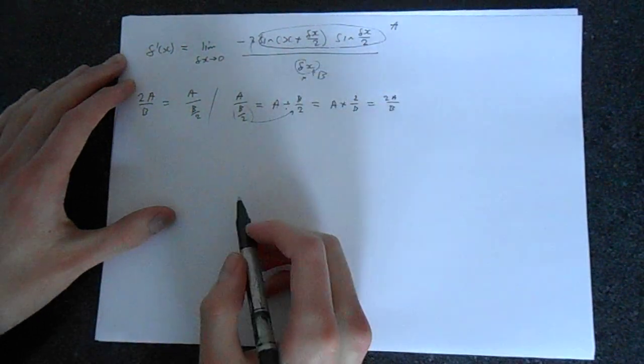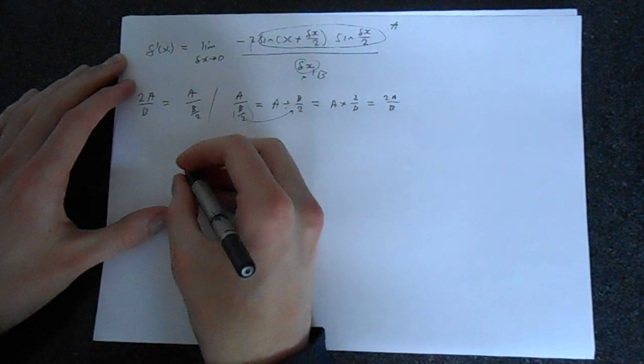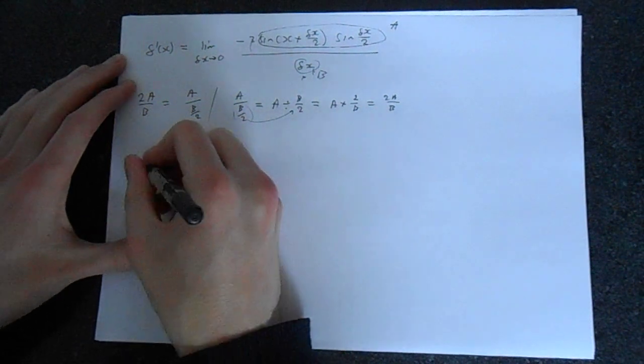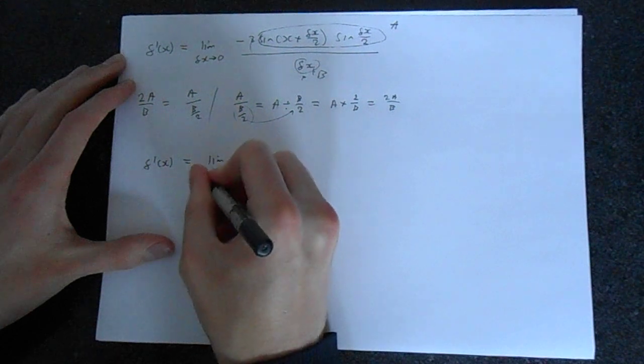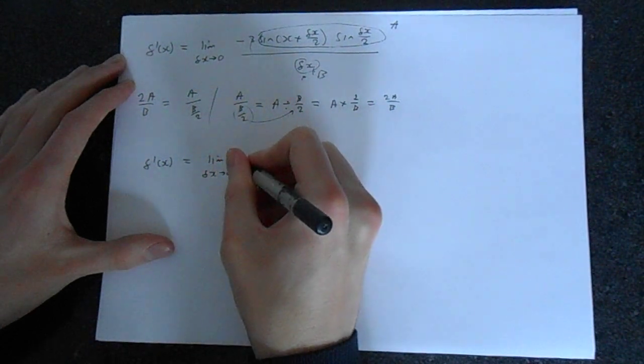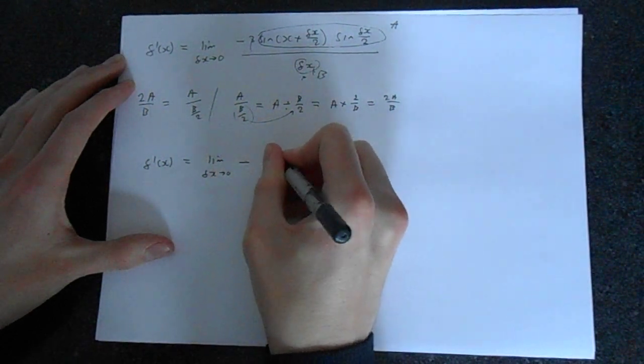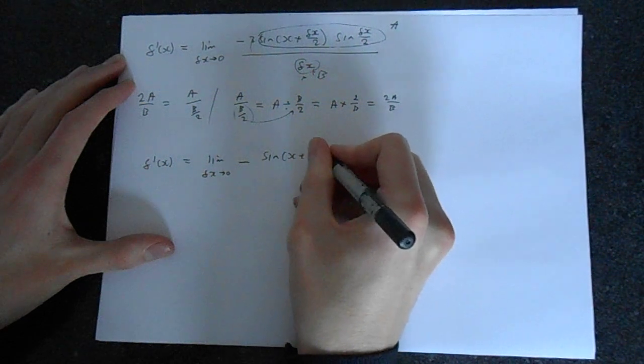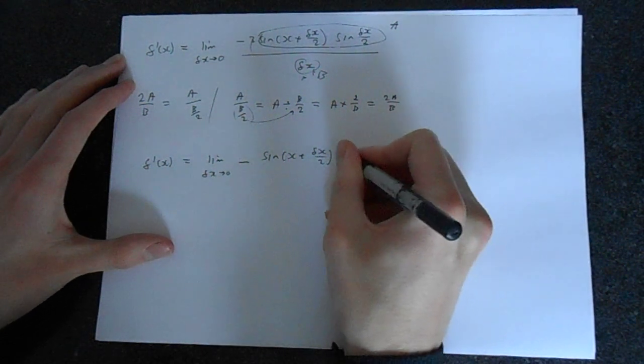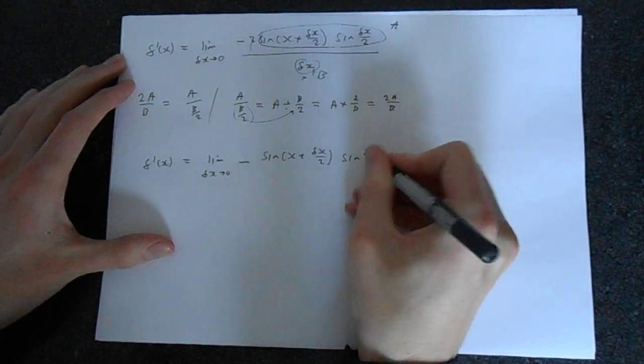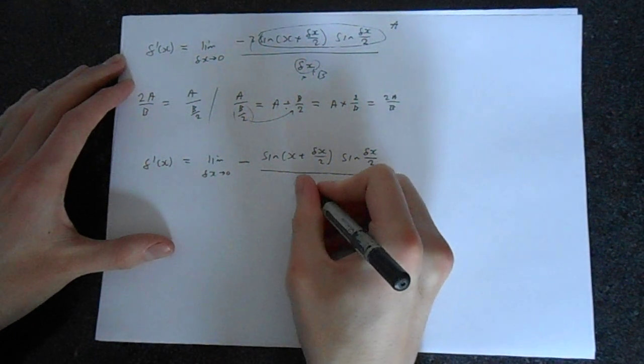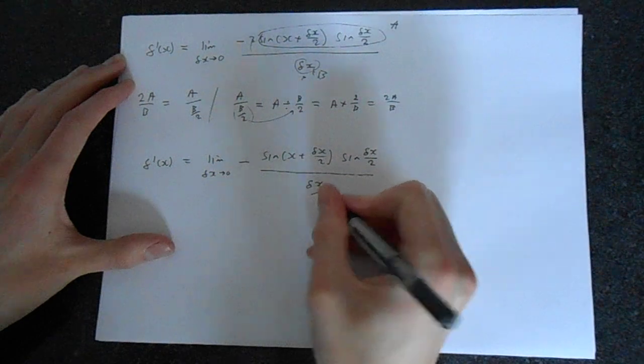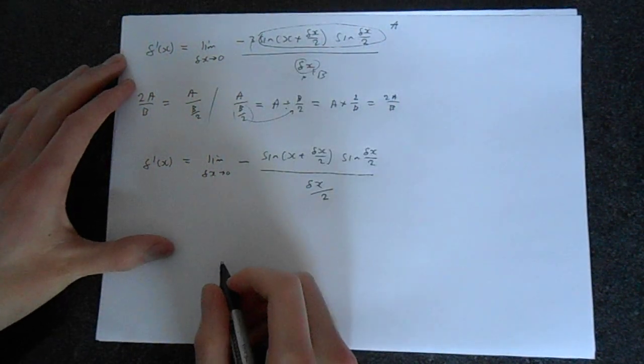So that 2 can basically come down here. So we can rewrite this as f dash of x is equal to the limit as delta x goes to 0 of minus sine x plus delta x over 2, sine delta x over 2, all divided by delta x divided by 2. So we've moved that 2 down at the bottom. All right.